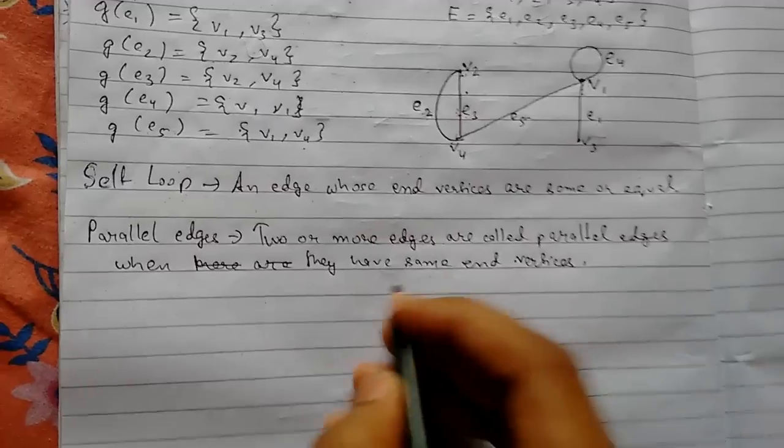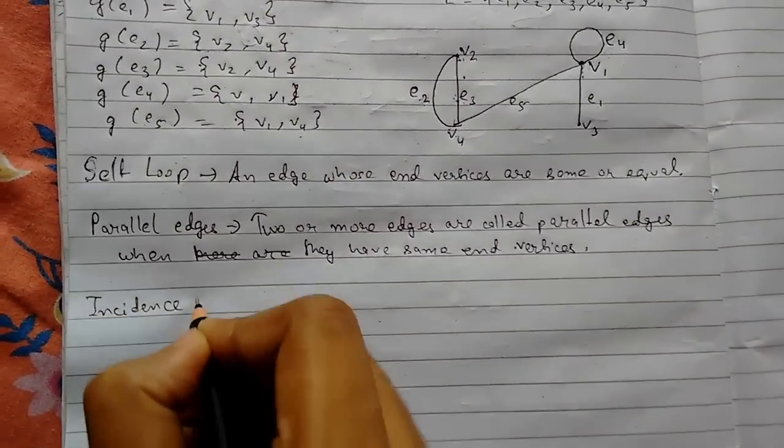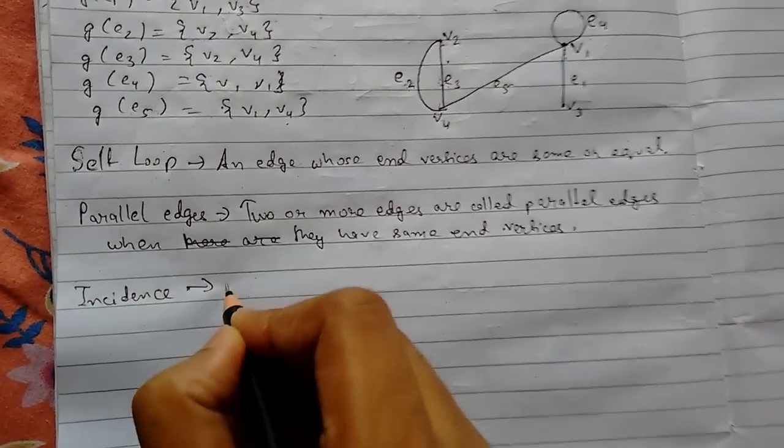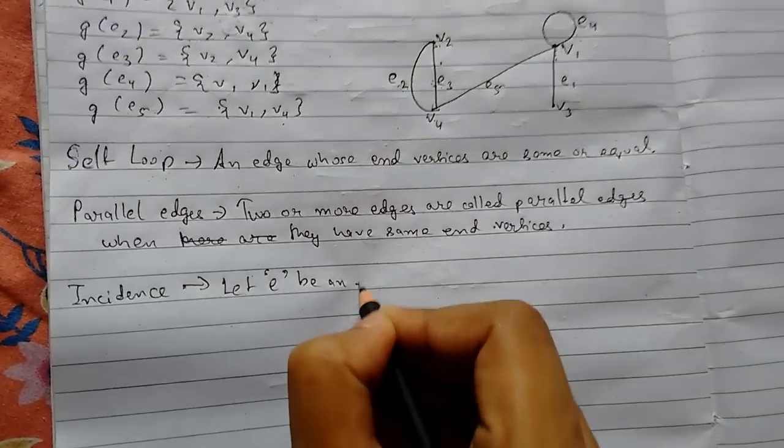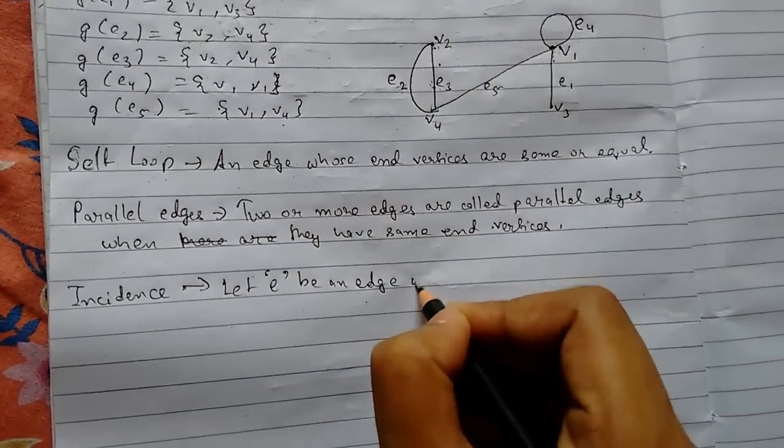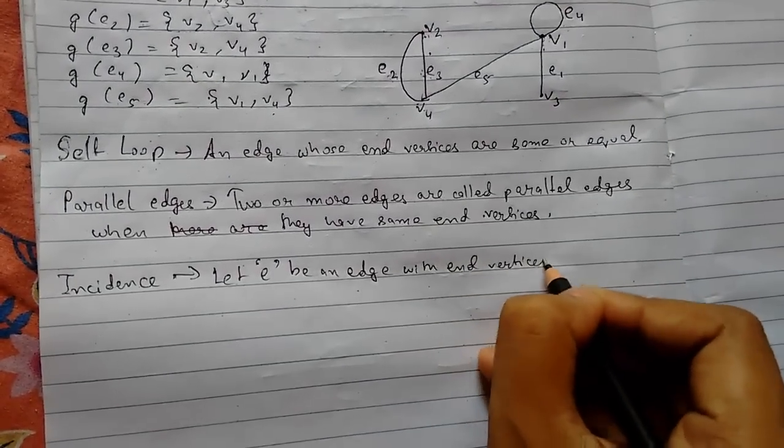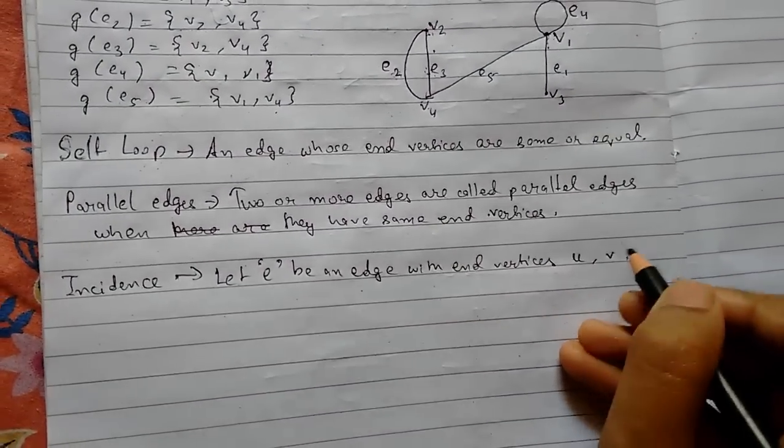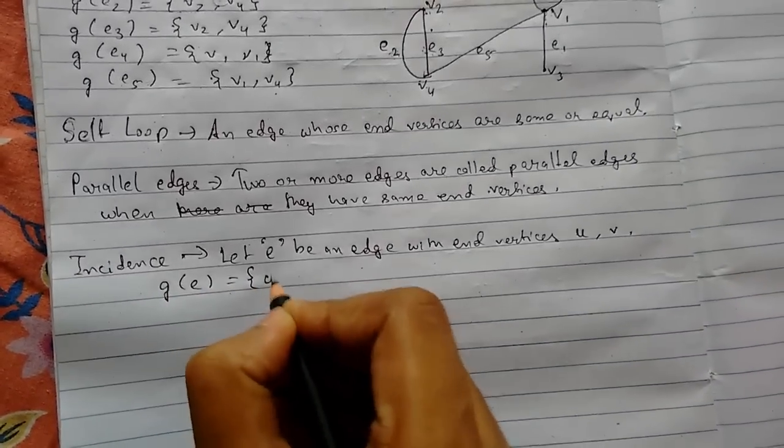Now let us look at incidence. Let e be an edge with end vertices u, v. Then we can say that g(e) equals u, v.